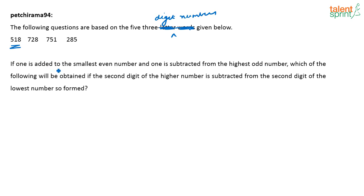If one is added to the smallest even number, which is the smallest even number? The smallest even number is 518. So one is added to the smallest even number will give me 519. And one is subtracted from the highest odd number, which is the highest odd number here? 751. One is subtracted from the highest odd number, so I will have 750.